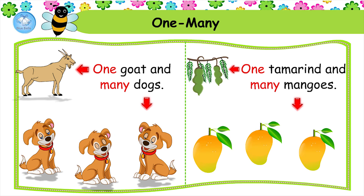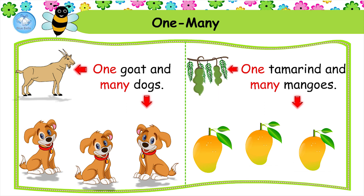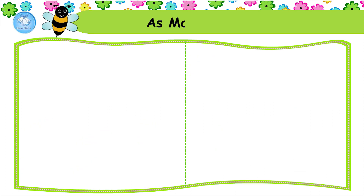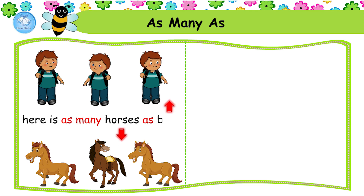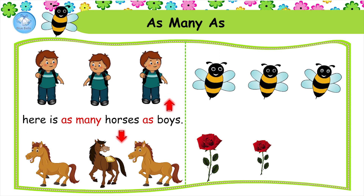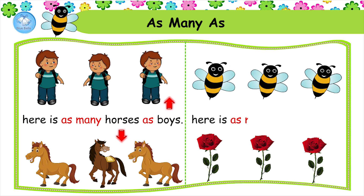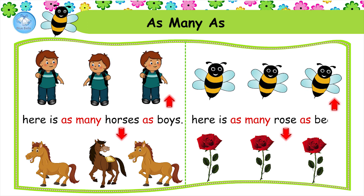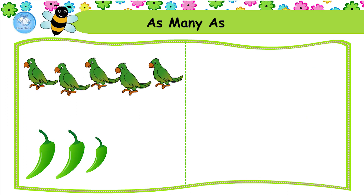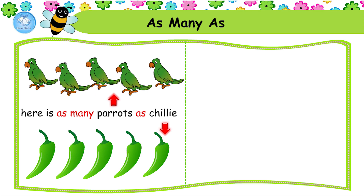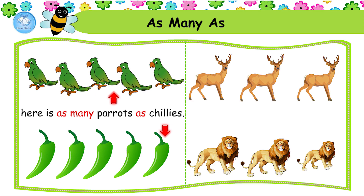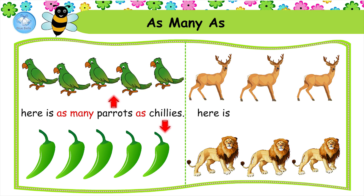As many as. Here is as many horses as boys. Here is as many rows as bees. Here is as many parrots as chilies. Here is as many deers as lions.